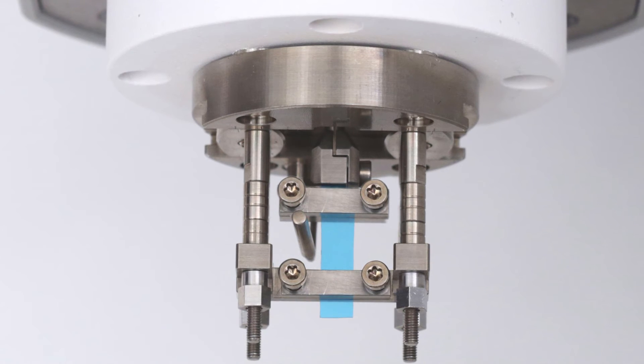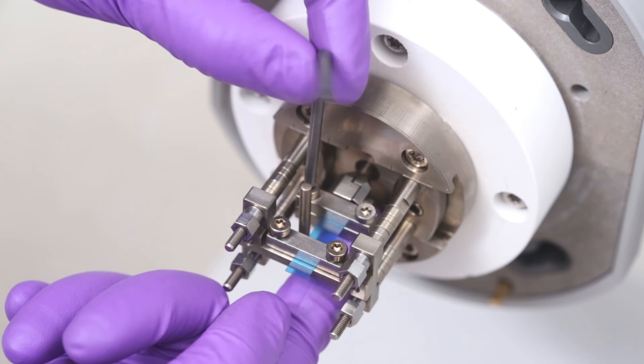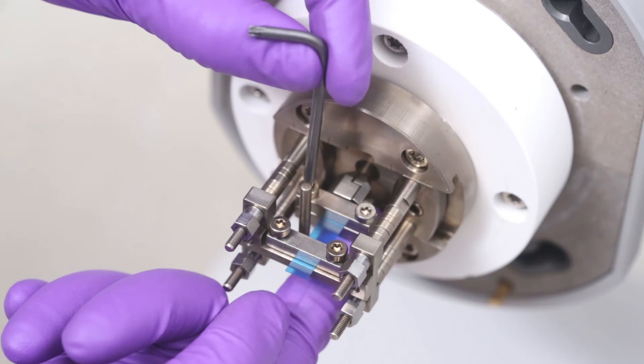Once you are happy with the positioning, tighten the two screws on the driveshaft part of the clamp using the T10 Torx key. While tightening the screws, support the driveshaft part of the clamp with your fingers. Be careful not to cause unwanted clamping effects on the sample.